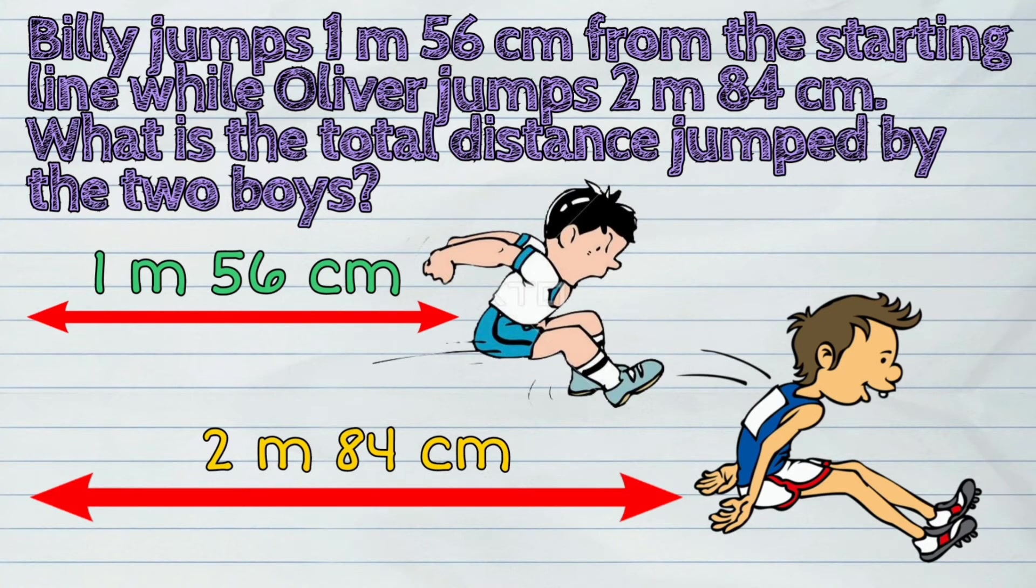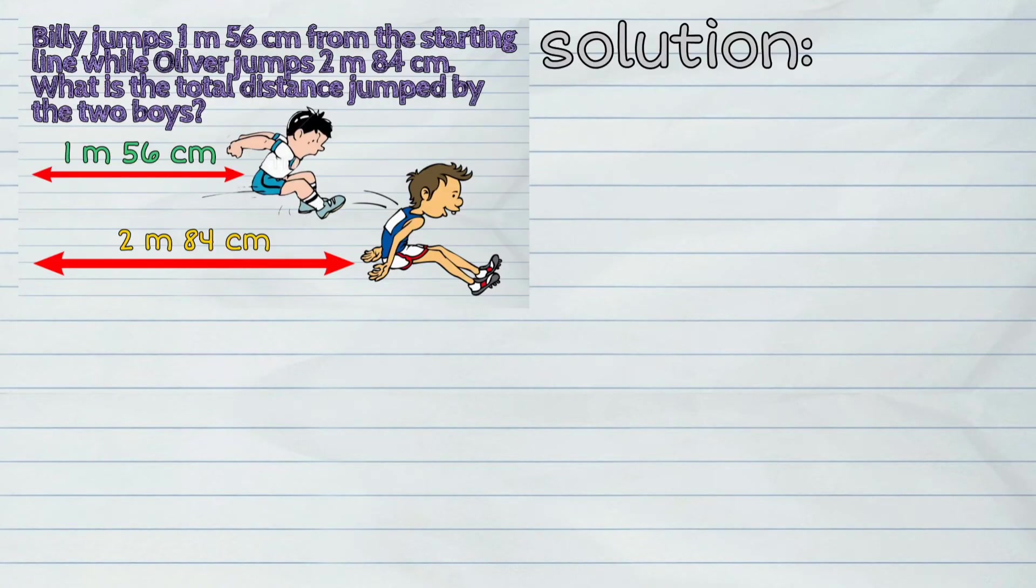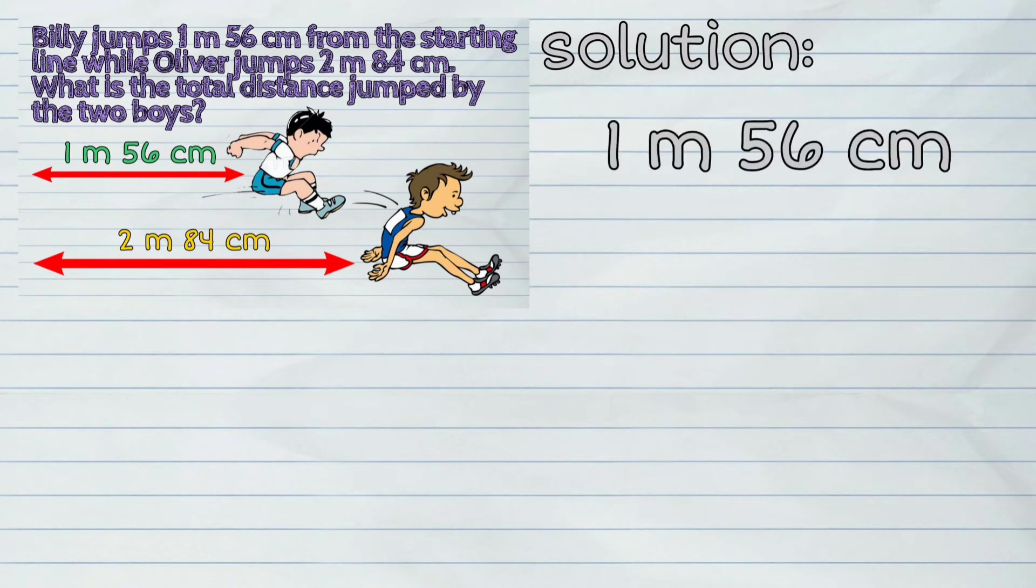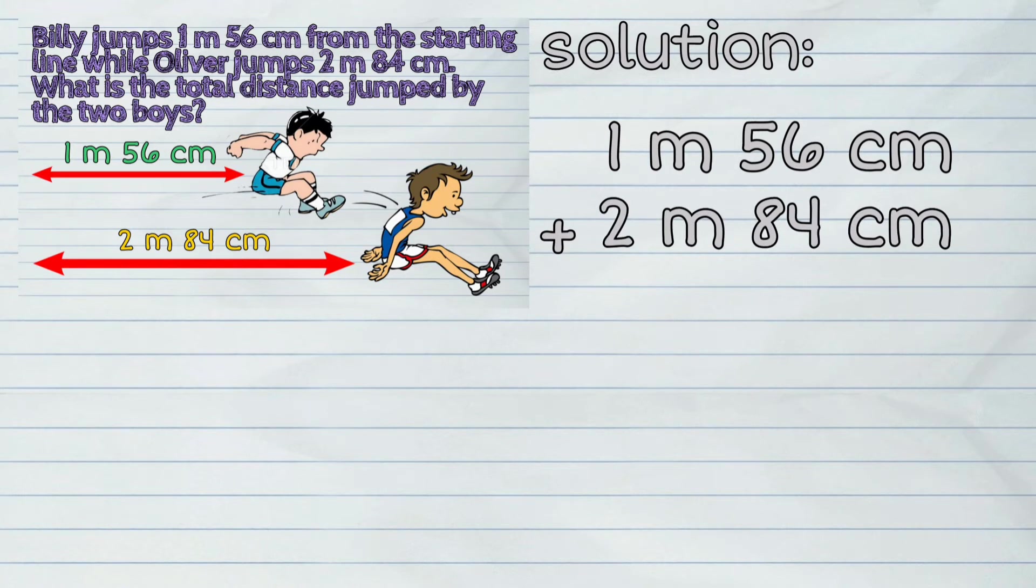What is the total distance jumped by the two boys? So the solution is 1 meter, 56 centimeters plus 2 meters, 84 centimeters.